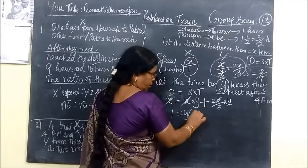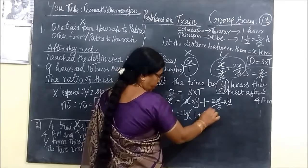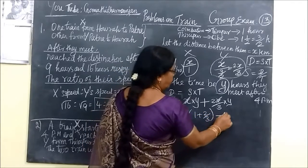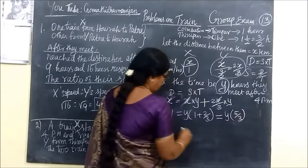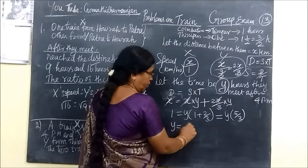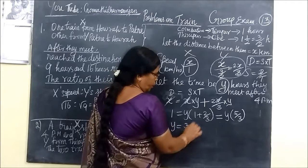The Y one is. So 1 plus 2 by 3. So if we change it to improper you can write 5 by 3. So that means Y equal to reciprocation 3 by 5.